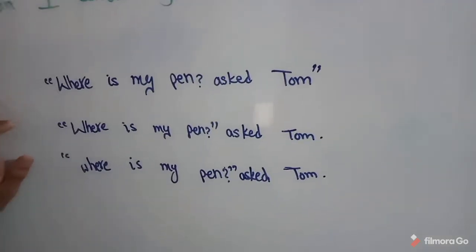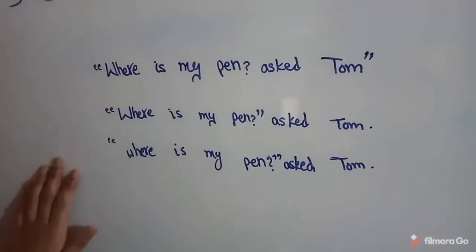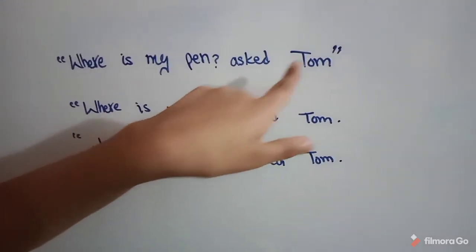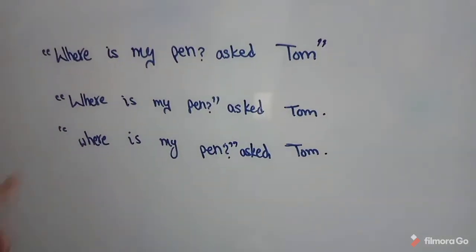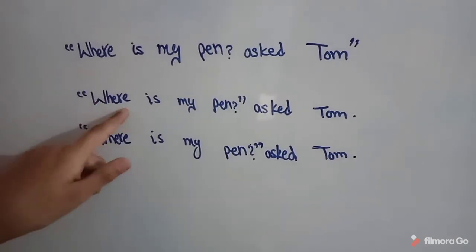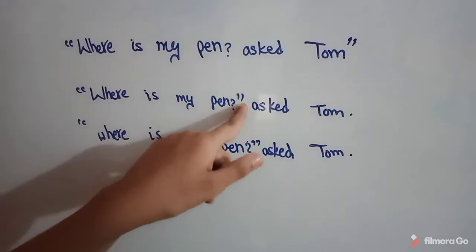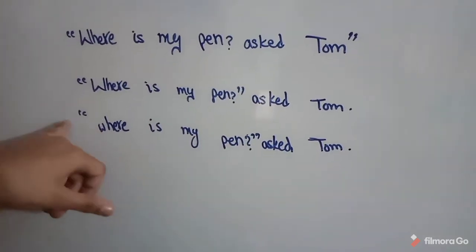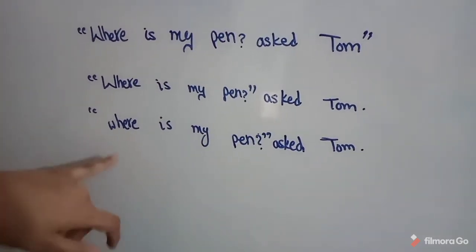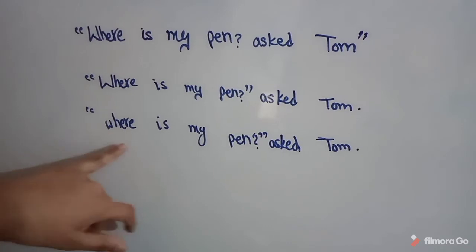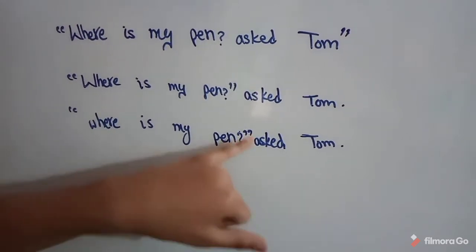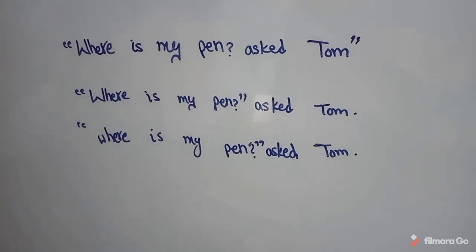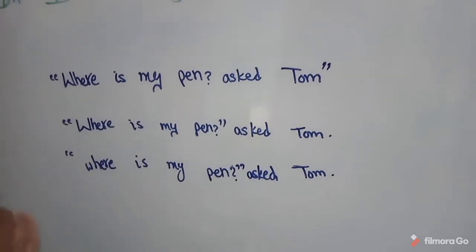Now, can you tell me which one is correct out of these three options? Option one: inverted comma, "where is my pen?" question mark, asked Tom. Option two: inverted comma start, "Where is my pen?" question mark, inverted commas close, asked Tom. Option three: inverted comma, "where is my pen?" question mark, inverted commas, and asked Tom with a small 'w'.